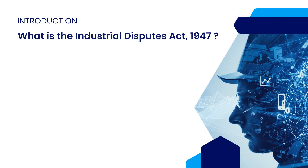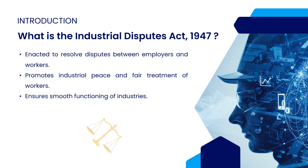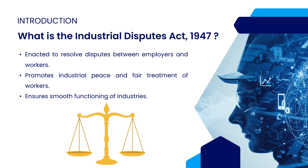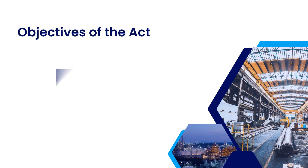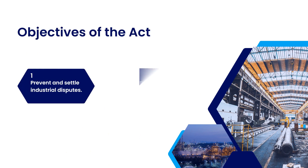The Industrial Disputes Act was passed in 1947 to resolve disputes between employers and workers and to promote industrial peace. Before this act, disputes often led to strikes, lockouts, or disruption of work. The act aimed to create a legal framework where both employers and employees could resolve their issues amicably.